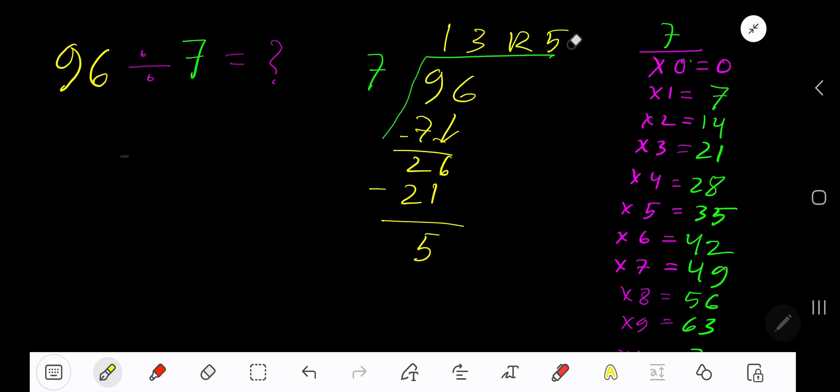If you want to write your answer in decimal form, add zeros and bring down a zero. The decimal must come to the quotient directly. 7 goes into 50 how many times? 7 times. 7 times 7 is 49. Subtract to get 1.